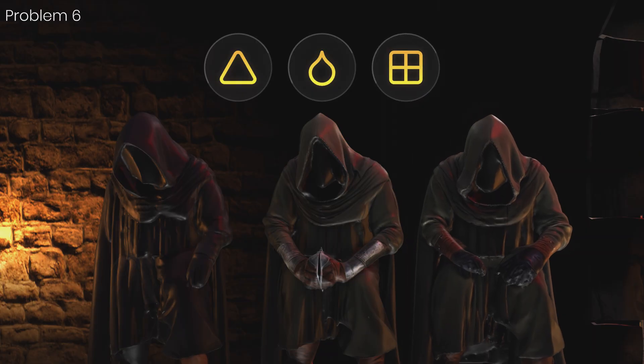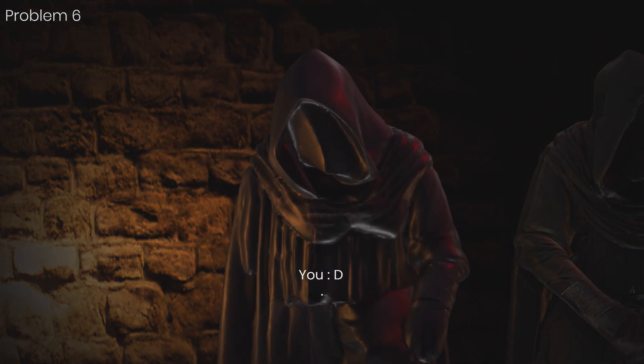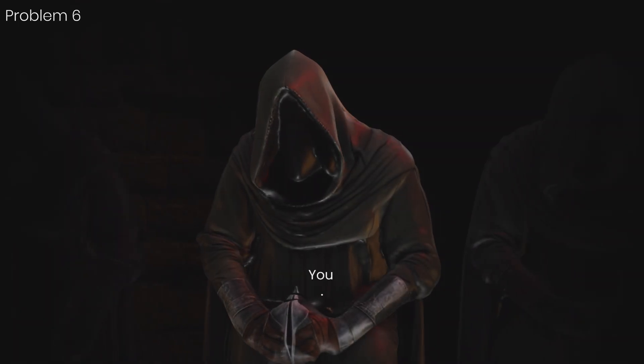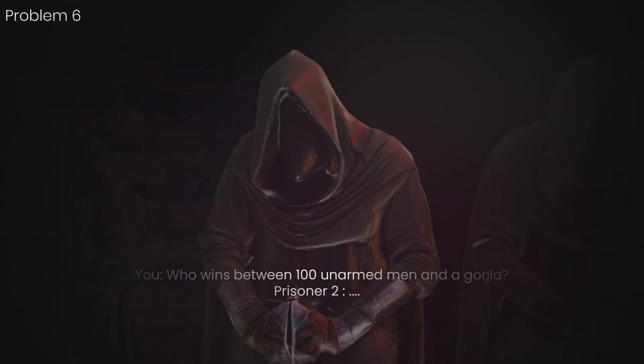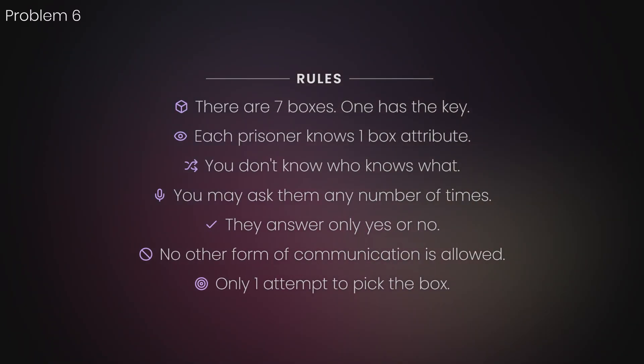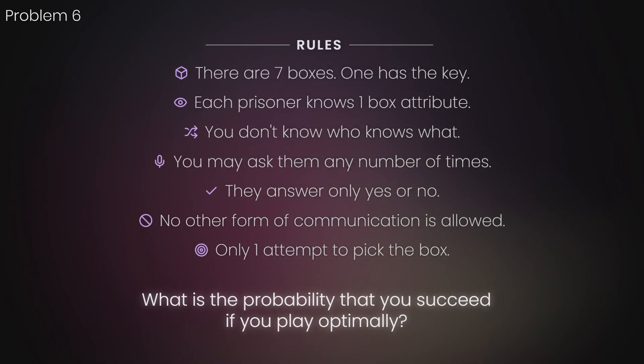Each prisoner knows which attribute the other prisoners were told, but you don't know which prisoner was told which attribute. You may ask each prisoner any number of times whether they know which box contains the key. They can only reply truthfully with yes or no. Any other form of communication is forbidden. Each box is equally likely to contain the key, and you only get one attempt to pick from the correct box.